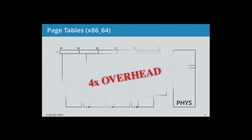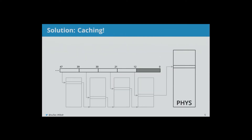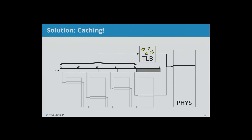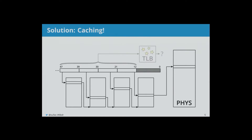How do you mitigate this problem? As always: caching. What if we just took this virtual address, took the bits used to index into the page tables, put it in a magic box called the TLB, and it tells us where to go in physical memory — or if it doesn't have the entry, only then do we walk the actual page tables.